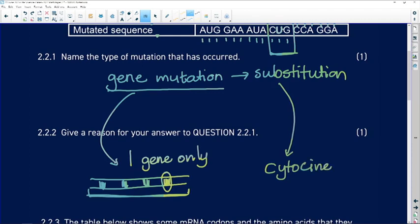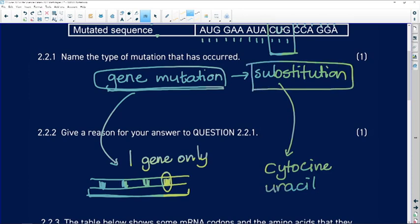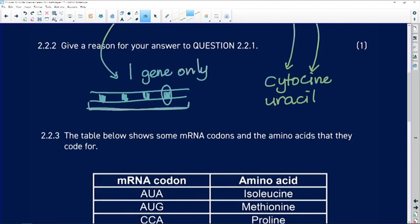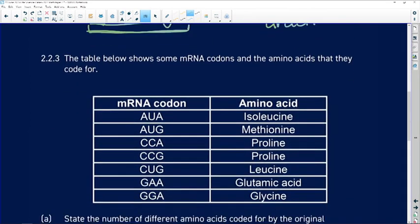And it's a substitution type because instead of there being a cytosine, we have substituted in a uracil. So there we've accounted for why we've called it a gene mutation. And over here, we have described why we call it a substitution kind of gene mutation.